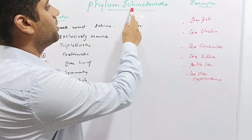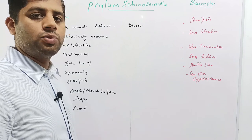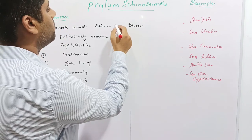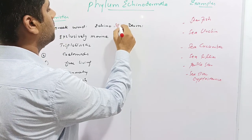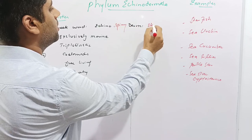The word Echinodermata is derived from the Greek language and is composed of two words: Echino and Derma. Echino means spiny and Derma means skin.